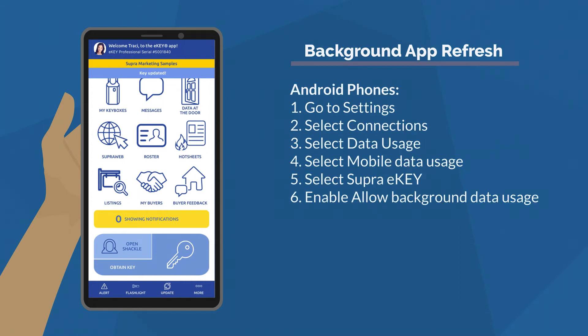For Android phones, go to Settings, Connections, Data Usage, and Mobile Data Usage. Select Super eKey and enable Allow Background Data Usage.